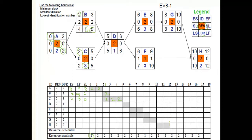We must make a decision between activity B and C. Using our priority rules: minimum slack first. Activity C has slack zero; activity B has slack two. The logic suggests prioritizing activity C — so activity B cannot take place here. We give preference to C, and activity B is deferred to a later time period.